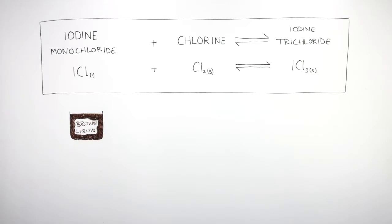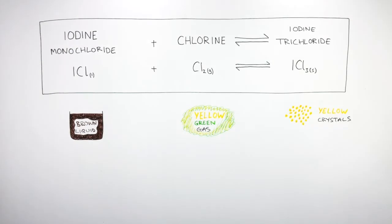Iodine monochloride is a brown liquid. Chlorine is a yellow-green gas, and iodine trichloride forms yellow crystals.